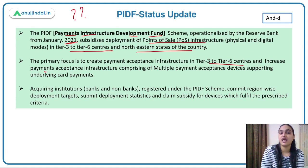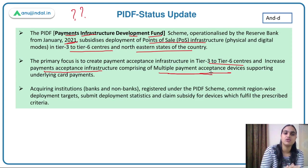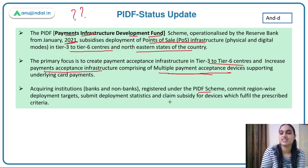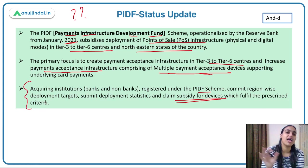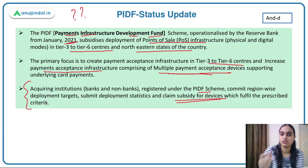The PIDF aims to increase payment acceptance infrastructure comprising multiple payment acceptance devices. Banks and non-banks registered under this scheme commit region-wise deployment targets, submit deployment statistics, and can claim subsidy for the devices they are deploying. These banks and non-banks set targets for deploying infrastructure, share related statistics, and then claim the subsidy through this fund, which is specifically created to develop payment infrastructure in India.